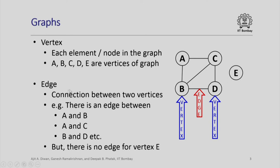An edge is the connection between two vertices. So, you will note in this particular illustration, there is an edge between A and B, there is an edge between A and C, there is an edge between B and D, but there is no edge from vertex E. These are examples of edges and vertices. Vertices and edges together constitute a graph.